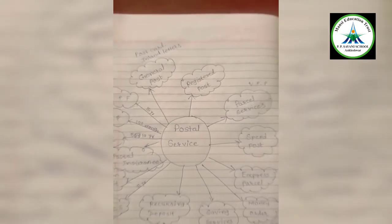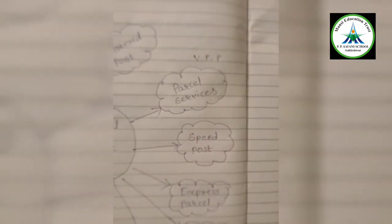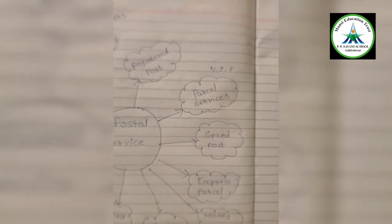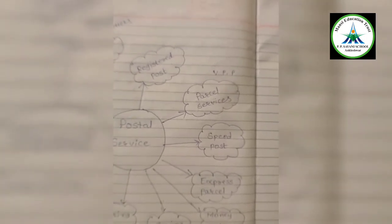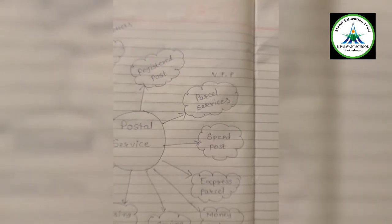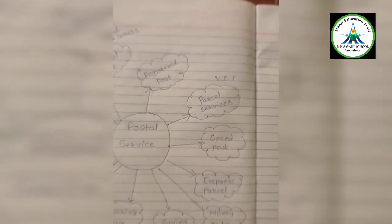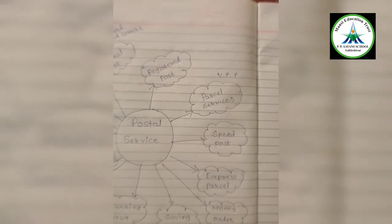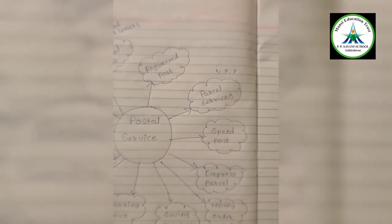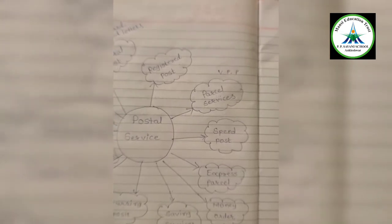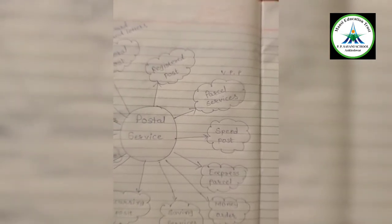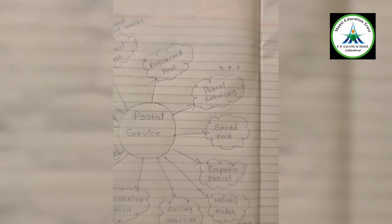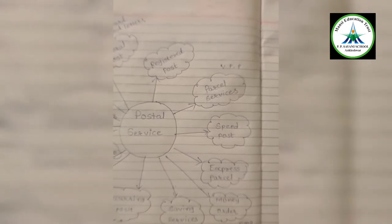Next is parcel services. So all products can be sent and received except which are prohibited by law or you can say banned by the government. Beside that you can send any other product from one place to another. Insurance can also be taken. Booking of parcels can be done.